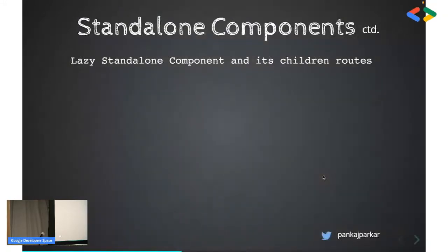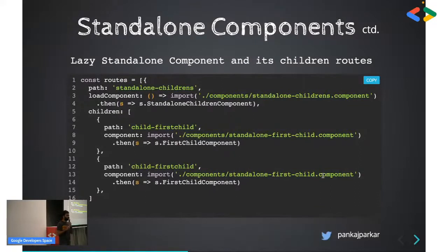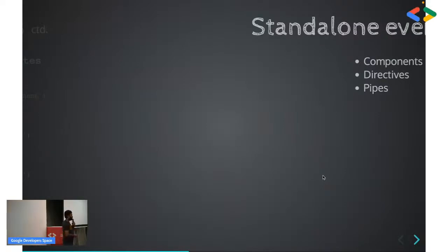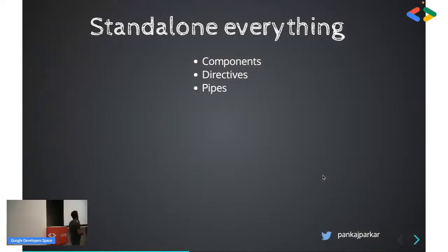For lazy standalone components with children routes, on the route level you can mention child routes using the children property and follow the same pattern. If something has to be loaded lazily, mention the path and inside load component mention the import. Line numbers eight and thirteen show how you can go for lazy loaded children routes. You can also make directives and pipes standalone — just add standalone: true, and if the directive or pipe depends on other services, add them inside an imports block.